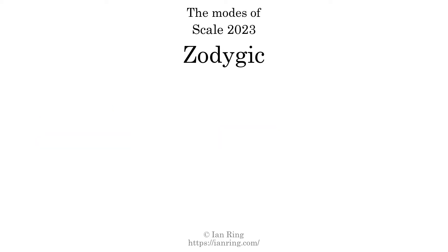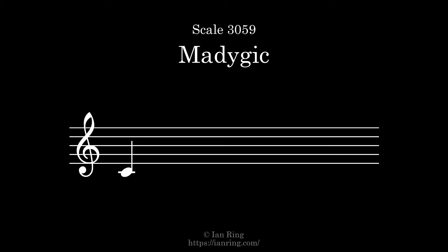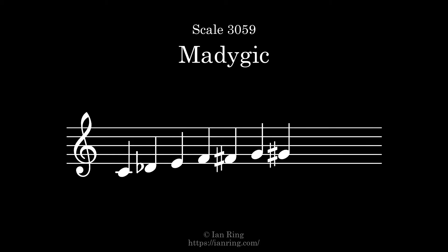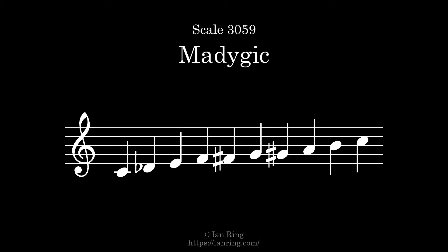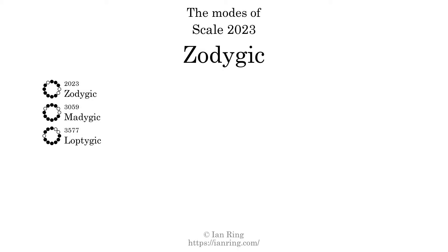This scale has 9 modes. The first mode is itself. The second mode is scale 3059, also known as Mediagic. It sounds like this. The third mode is scale 3577, also known as Loptagic. It sounds like this.